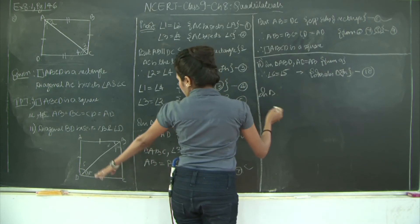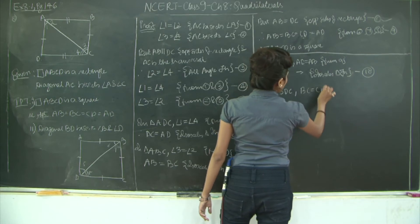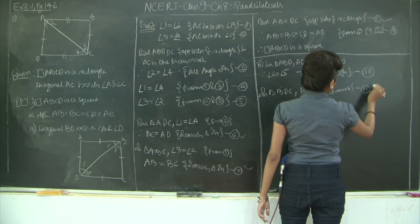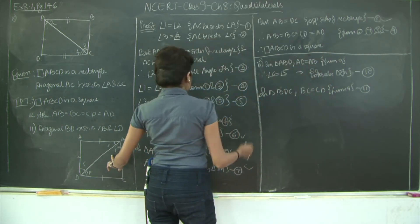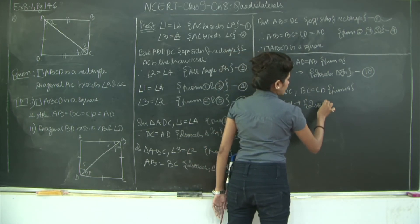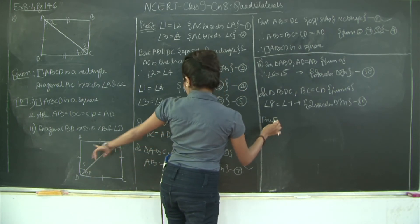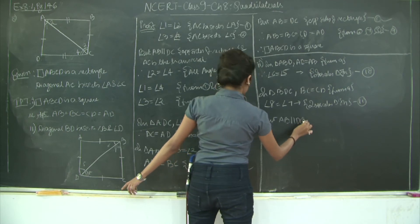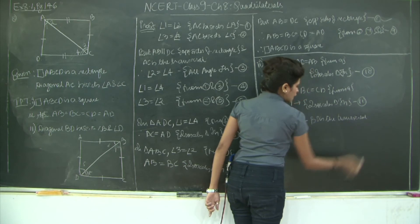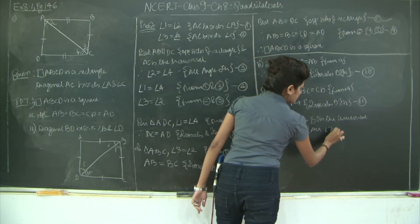Also in triangle BDC, BC equals CD — again from statement 9. Mark as statement 11. By the isosceles triangle theorem, angle 8 equals angle 7. Also, AB is parallel to DC and BD is the transversal, therefore angle 6 equals angle 8 by the alternate angle theorem. Mark this as statement 12.